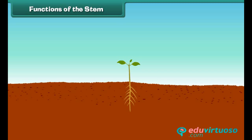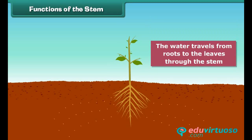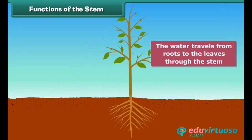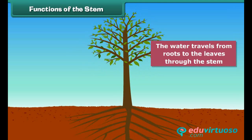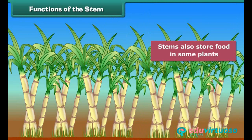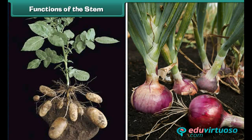The water taken in by the roots travels to the leaves through the stem, where it is used to make food. The stem also carries food made by leaves to all parts of the plant. Sometimes the food made by leaves is stored in the stem, as in sugar cane. Other examples are potato and onion, and we eat these stems to get nutrition.